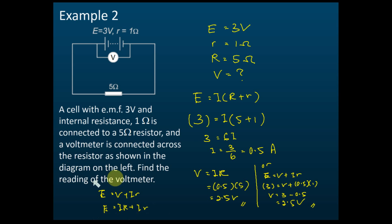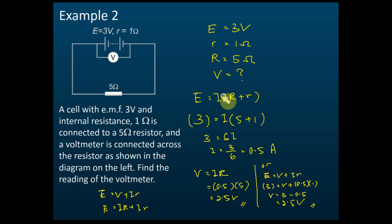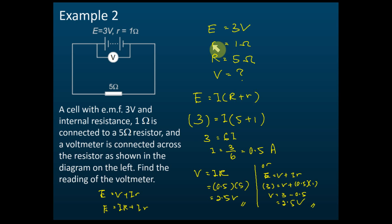You must find the current first. We have E and the two resistances, so we can find the current using E equals i brackets R plus r. Substituting E equals 3 volts, load resistance R equals 5 ohm, and internal resistance r equals 1 ohm, we get i equals 0.5 amperes.